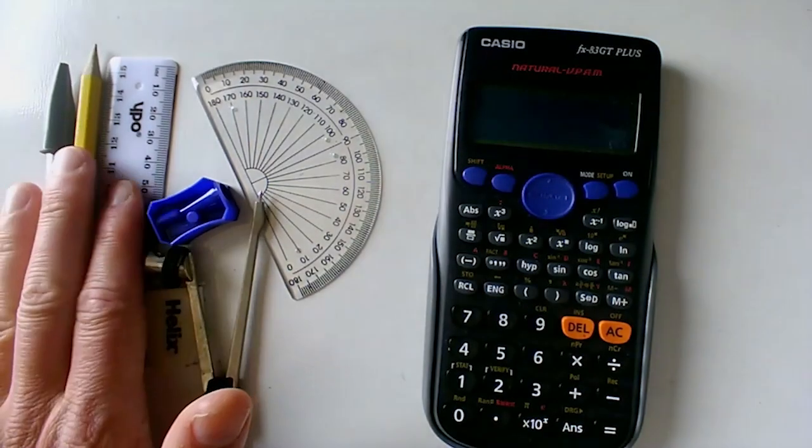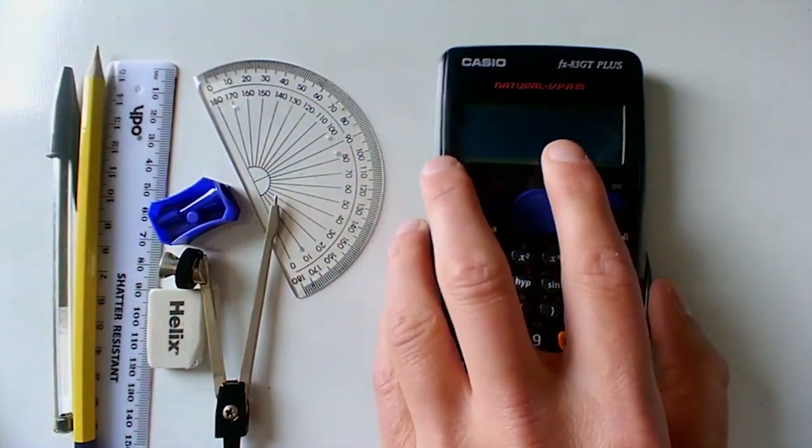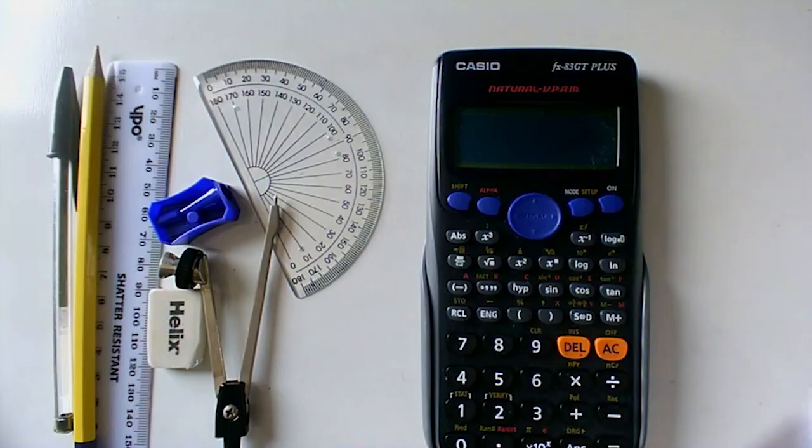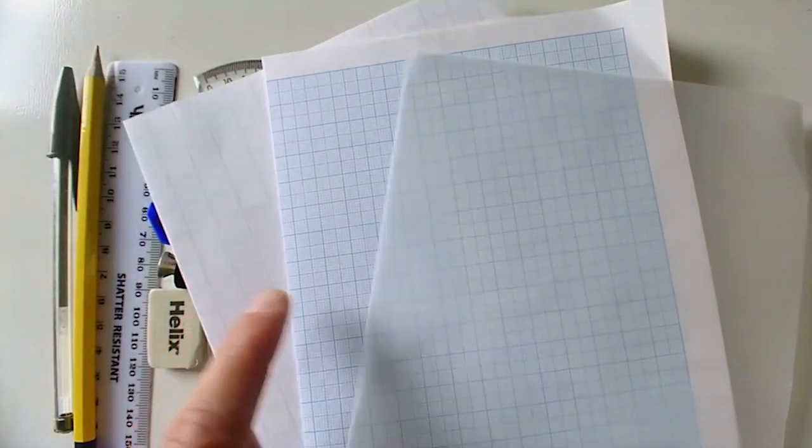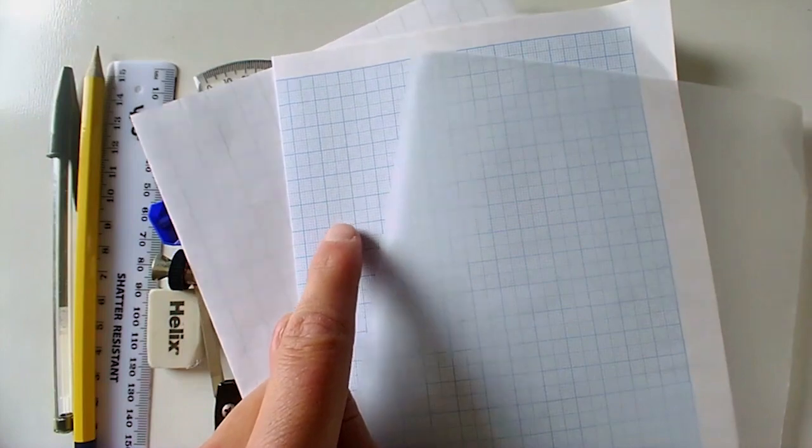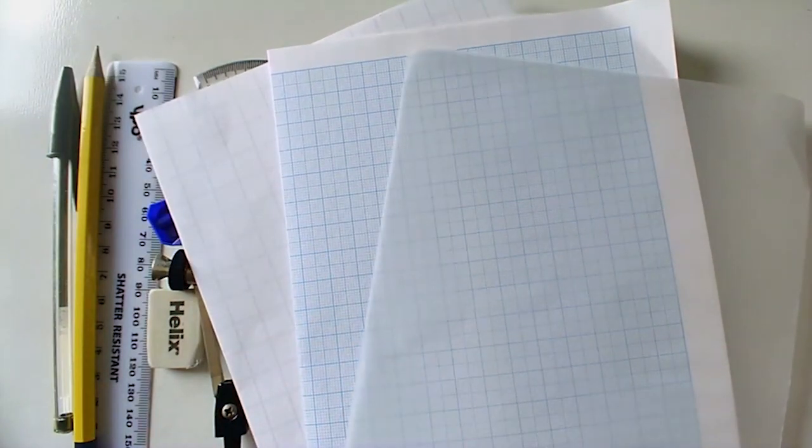So there we have it: your basic stationery, your protractor and your compass, a decent scientific calculator, and then a stack of specialist papers - one centimeter square, one millimeter square, and then some tracing paper.